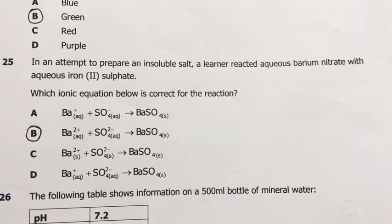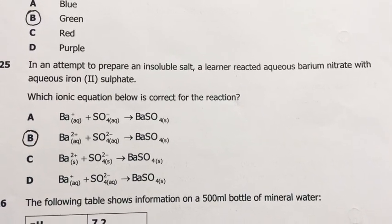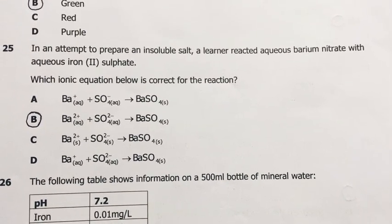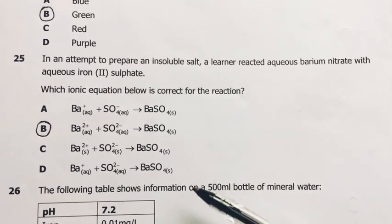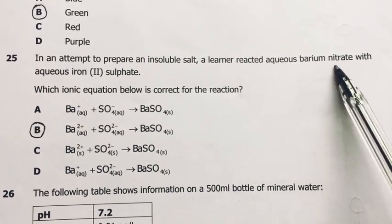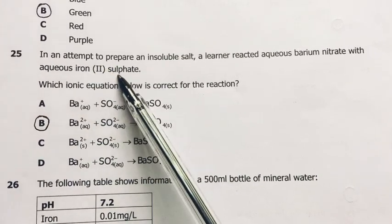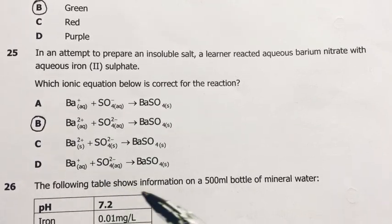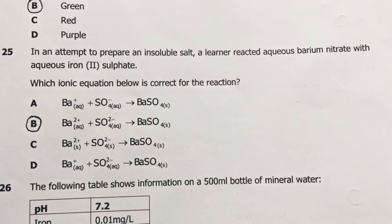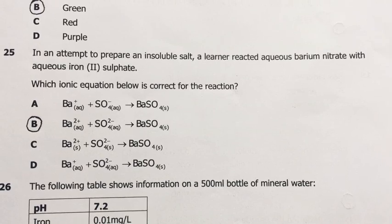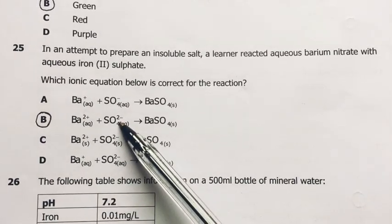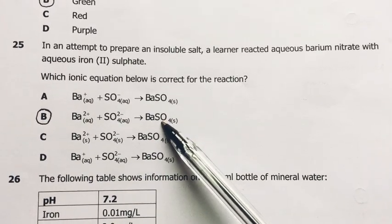Number 25. In an attempt to prepare an insoluble salt, a learner reacted aqueous barium nitrate with aqueous iron-2 sulfate. Which ionic equation below is correct for the reaction? So you are reacting barium nitrate, a soluble salt in aqueous, and then iron-2 sulfate in aqueous already, a soluble salt. And you and me at this point should know barium reacts with sulfate ions to form an insoluble salt, which is barium sulfate. So at the end of it all, once you cancel out the spectator ions, you remain with barium 2+, sulfate 2-, they form such a salt.